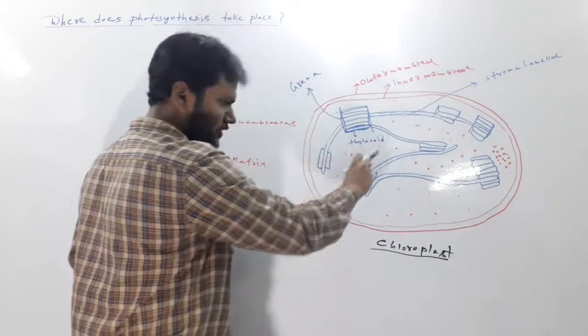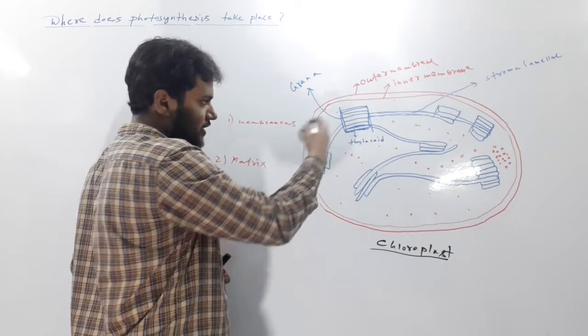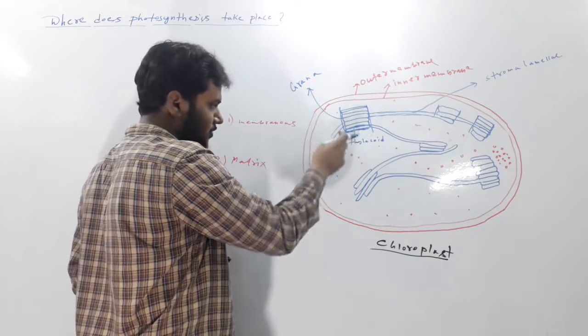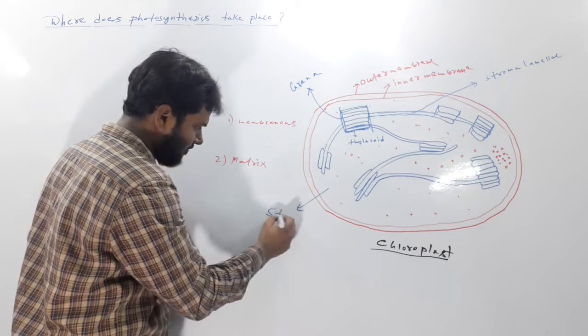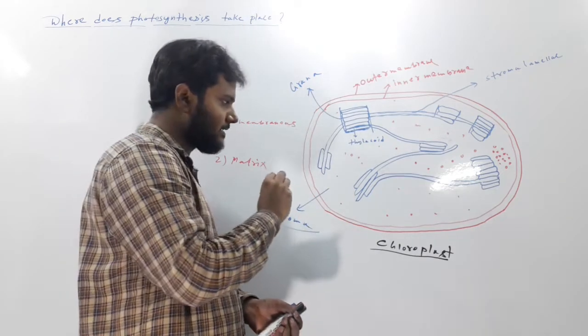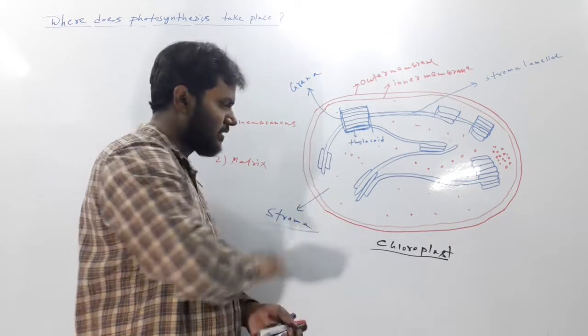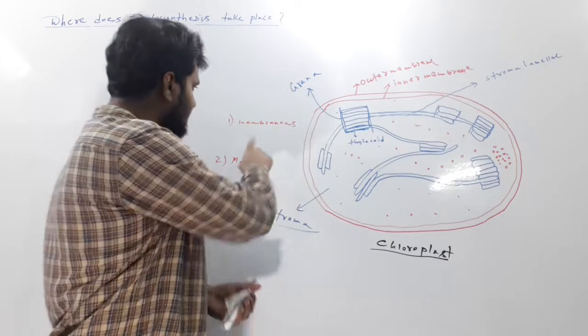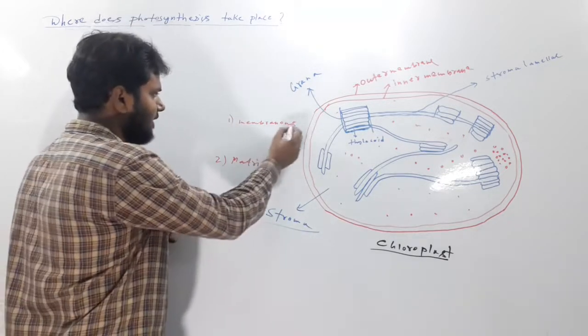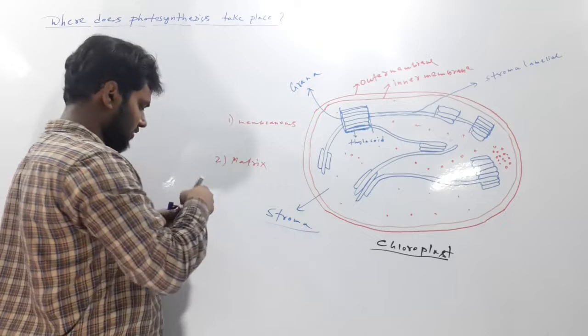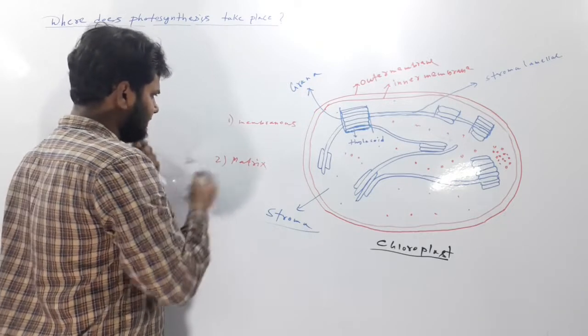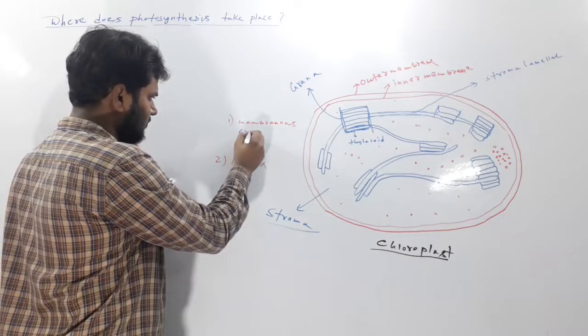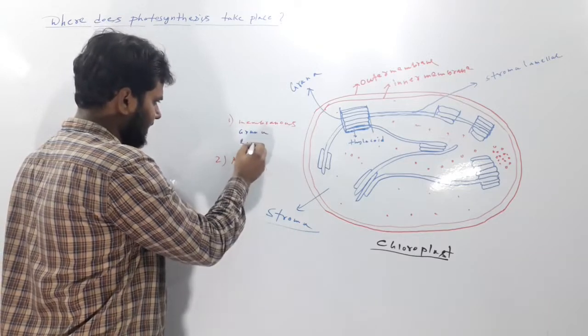And the liquid, the matrix on which this membranous structure is floating is called stroma. This membranous system - what is included here? Here is grana, here is lamelli.